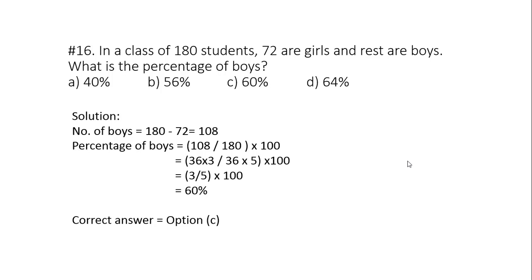Question number 16. In a class of 180 students, 72 are girls and rest are boys. What is the percent of boys? This is pretty easy. First we will find number of boys. So 180 minus 72 equals to 108. So percent of boys will be number of boys divided by total number of students into 100. So on simplification we get answer as 60 percent. So correct answer option is C.